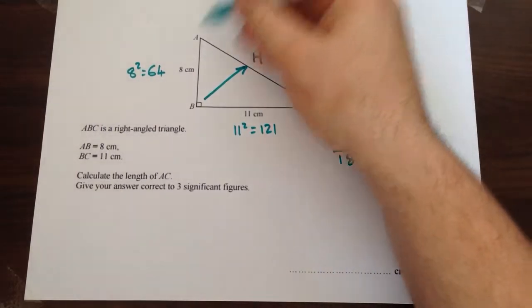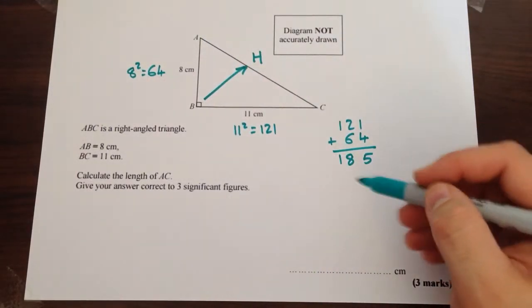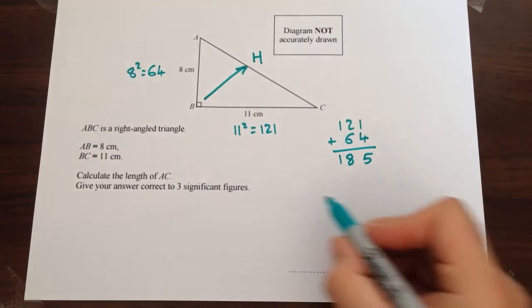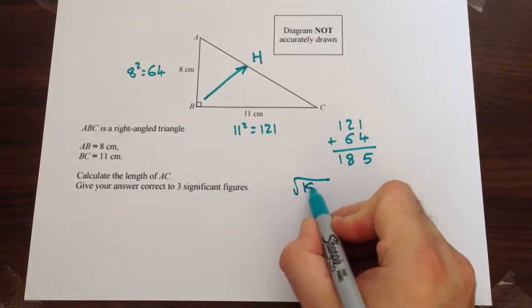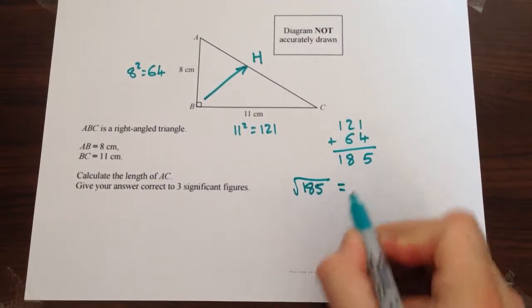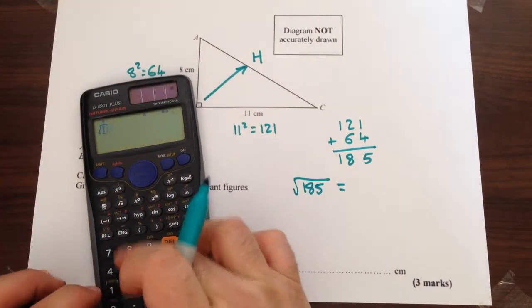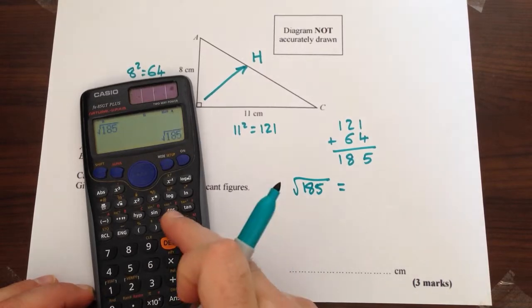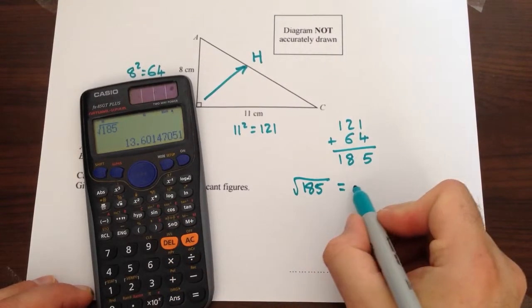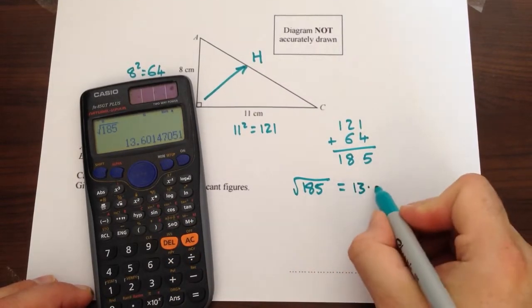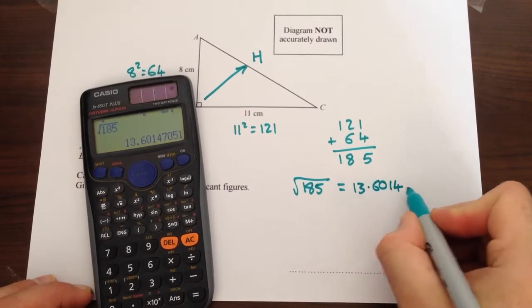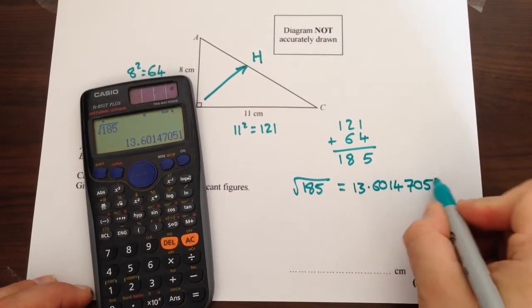Now that would be the area of the square on this side but we don't want the area of the square we just want the length of AC. So we need to do the square root of 185 and for that we'll need a calculator. So square root of 185 equals, press SD to change it to a decimal, 13.60147051.